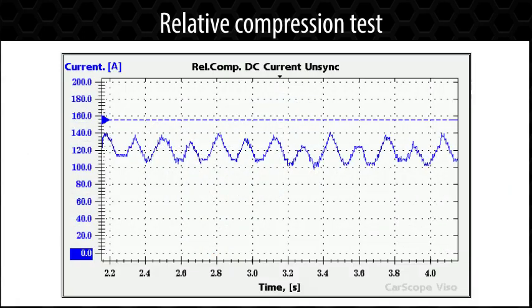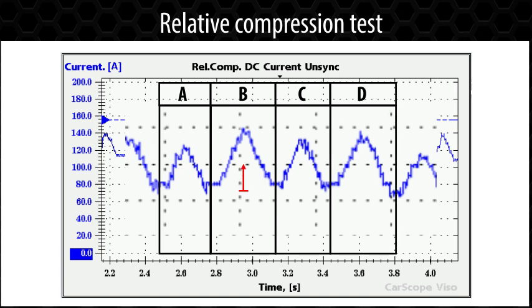Relative compression test is used to compare the engine's cylinder with the highest pressure, which is assigned a value of 100%, to the other cylinder pressures, which are assigned a lower percent.